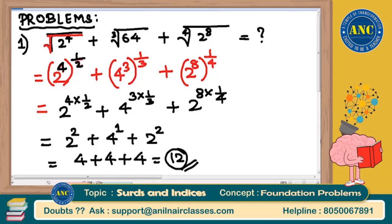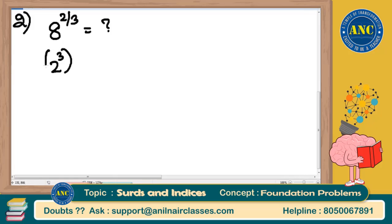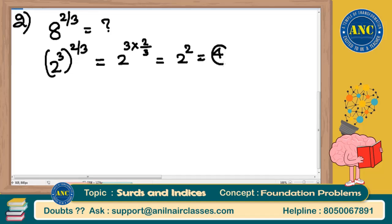Second question: find the value of 8 power 2 by 3. We will understand each basic question so that it should not trouble us in difficult questions later. 8 power 2 by 3 can be written as 2 cube whole power 2 by 3. Using a power m whole power n = a power m into n, it becomes 2 power (3 × 2/3) = 2 power 2 = 4.